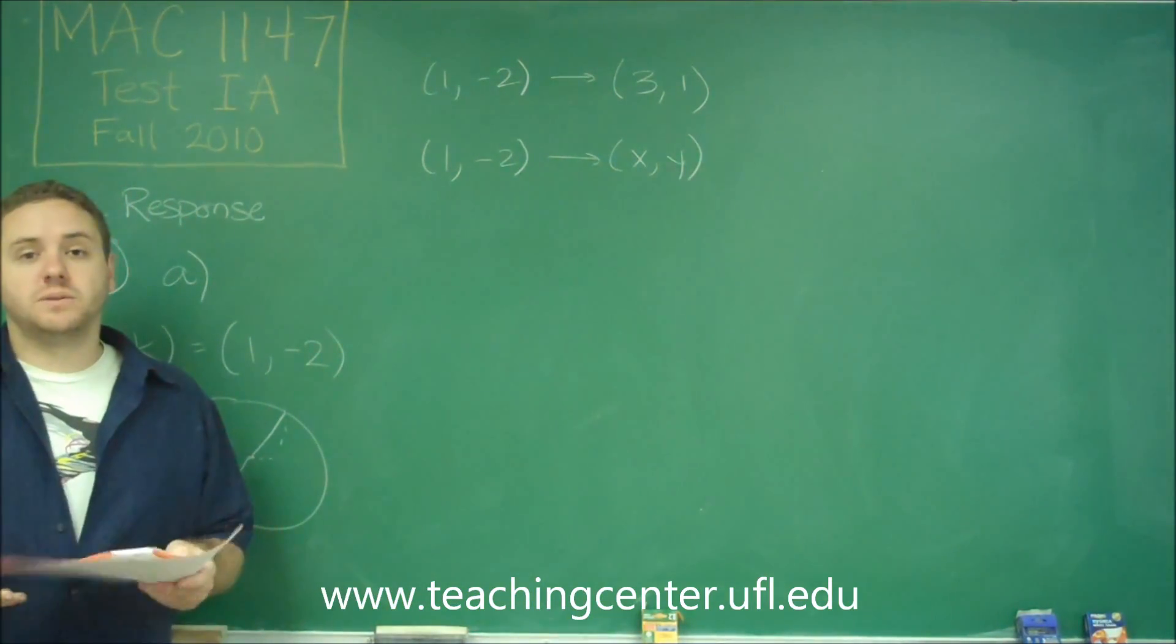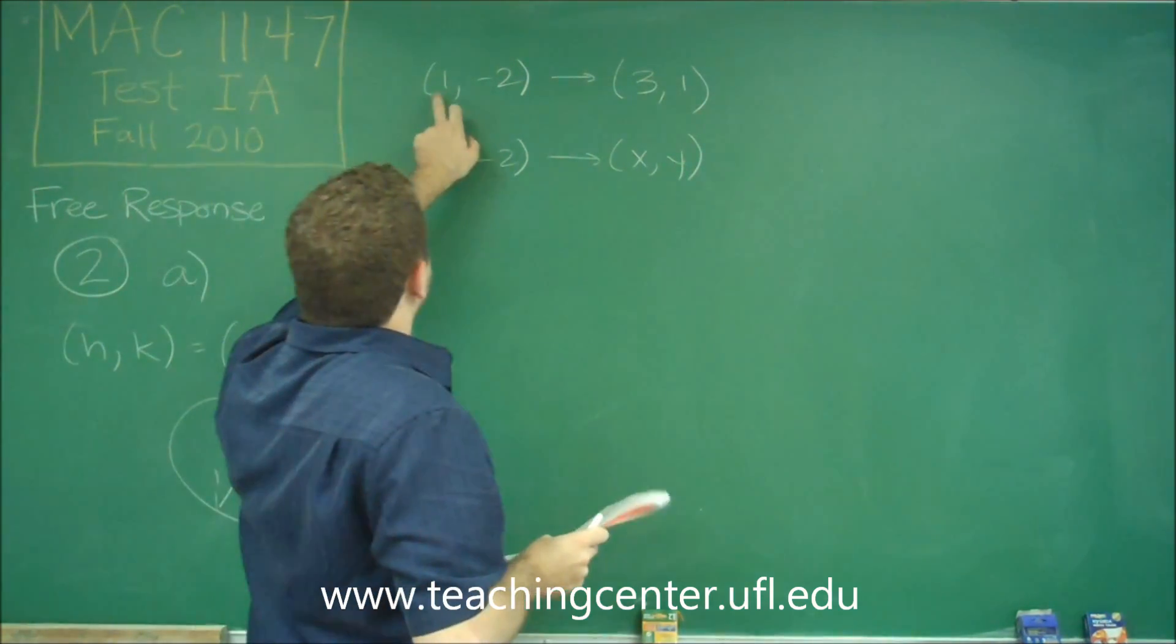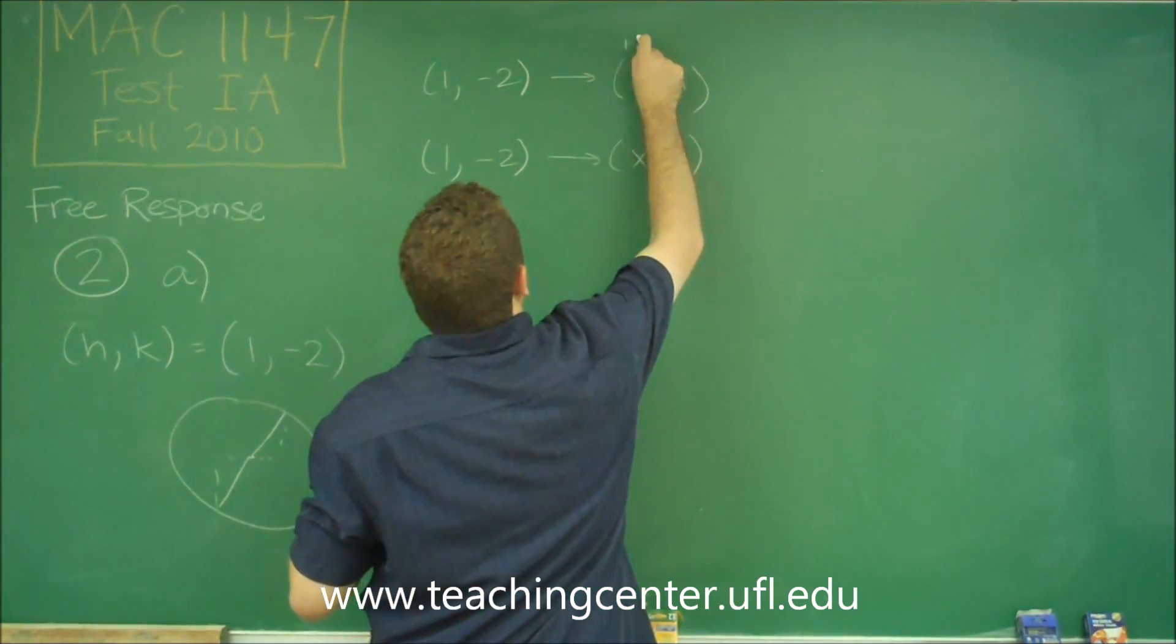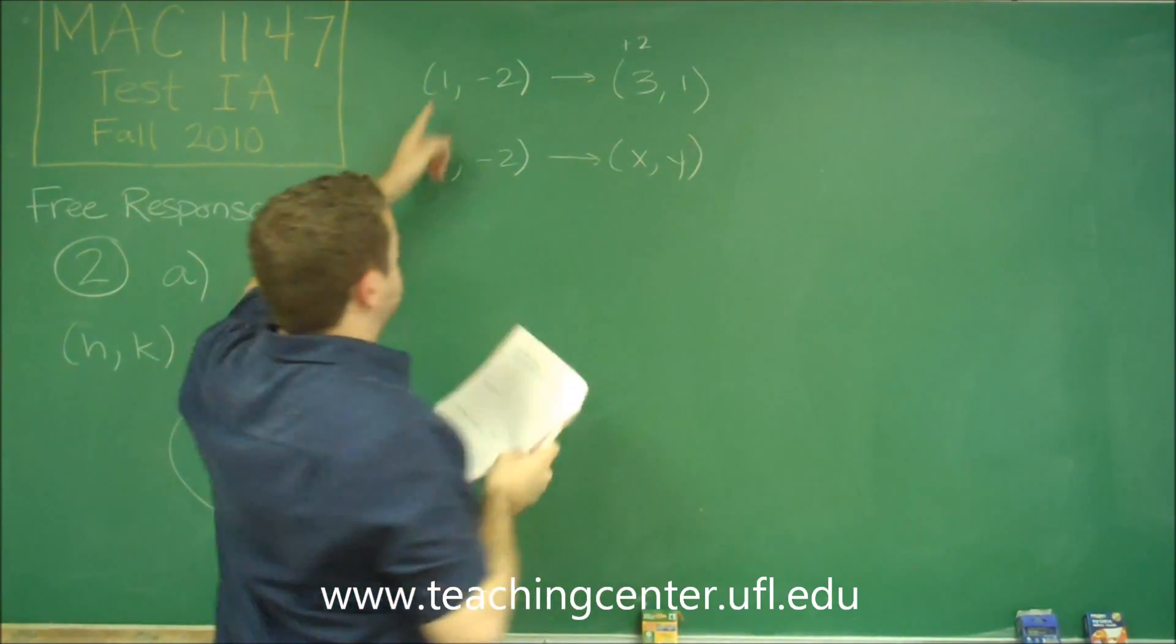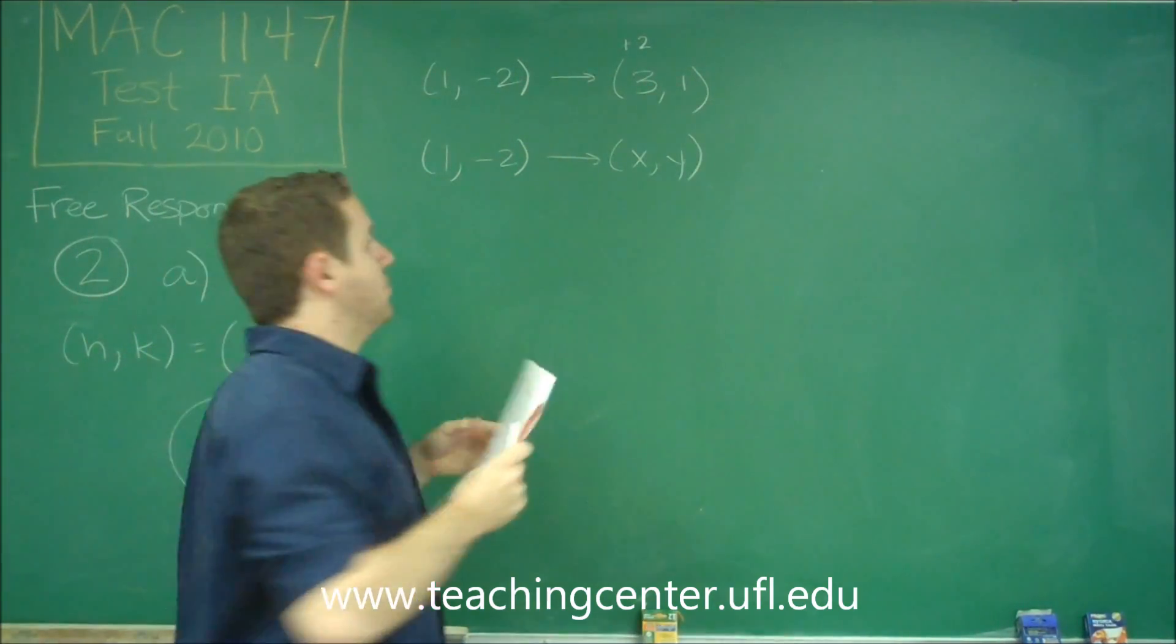Let's just think about this in terms of how much you're translating in the x and y directions. So here we're going up 2 in the x from 1 to 3, and we're going up 3 in the y from negative 2 to 1.